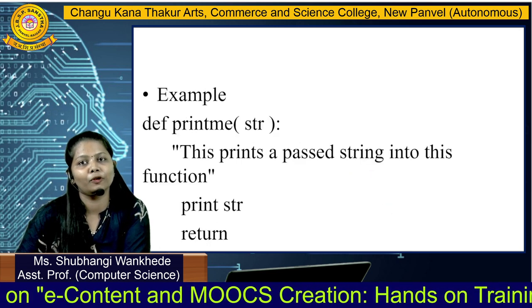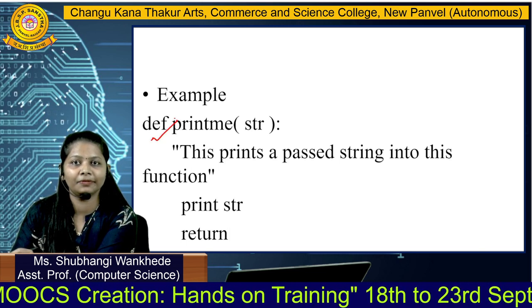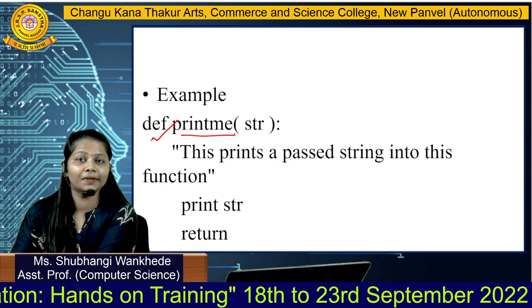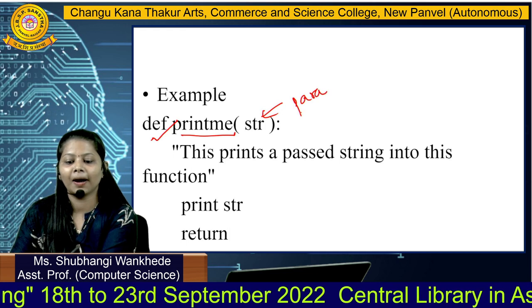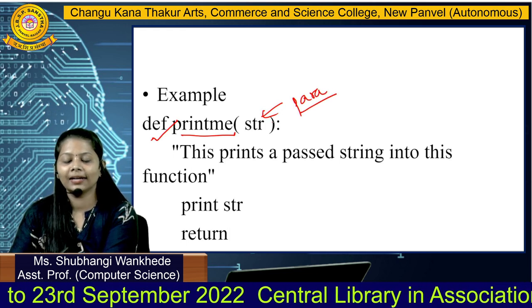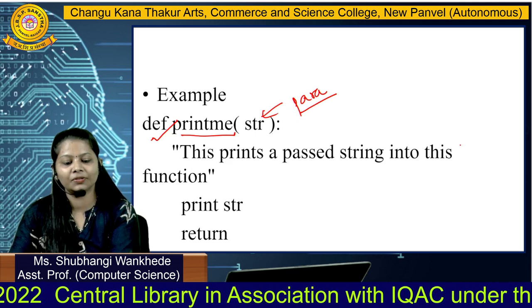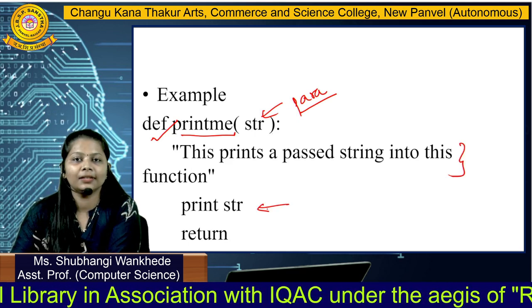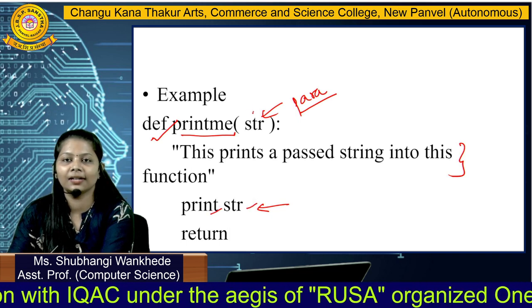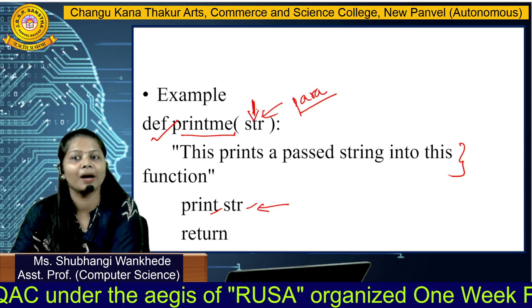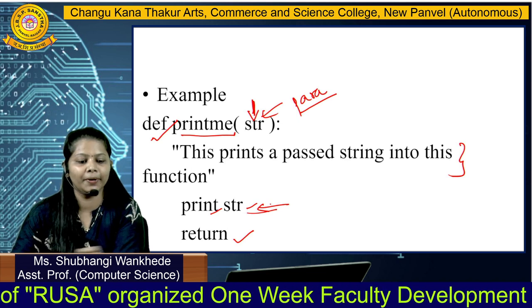Now we will see an example of a function. Here, we have defined a function using the def keyword. 'print_me' is the name of the function. 'str' is the parameter which we have passed to the function — str is a string which we are going to pass to the function when it is called. We use the print command to print str. The function will return the string which we have printed.